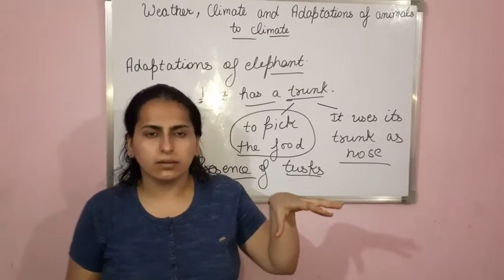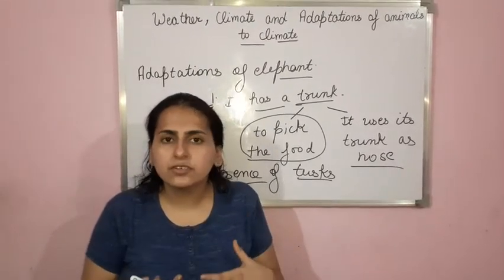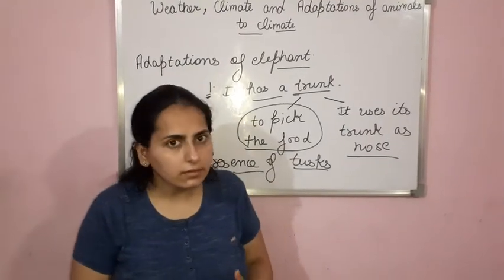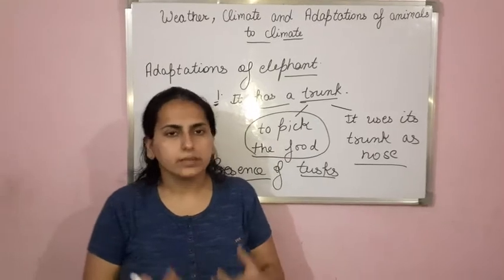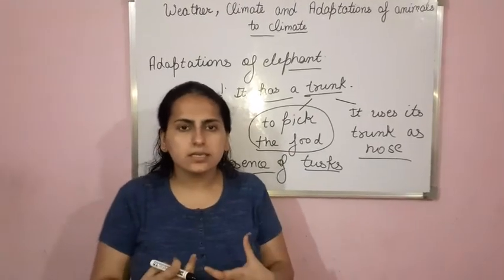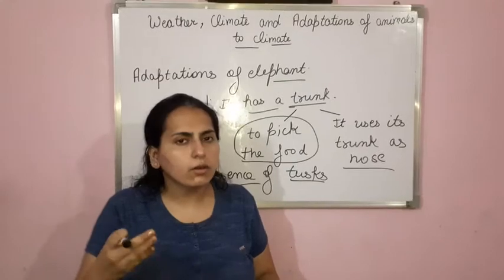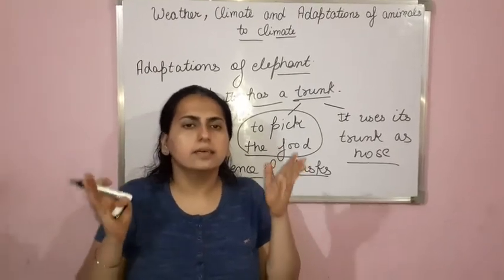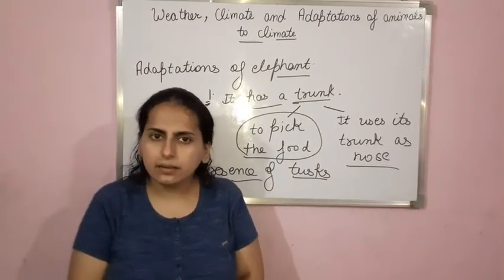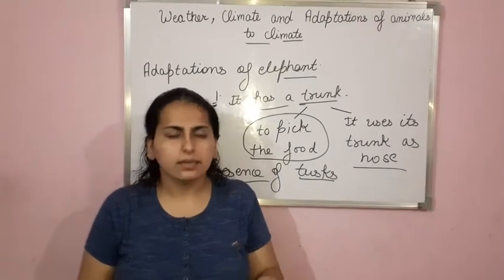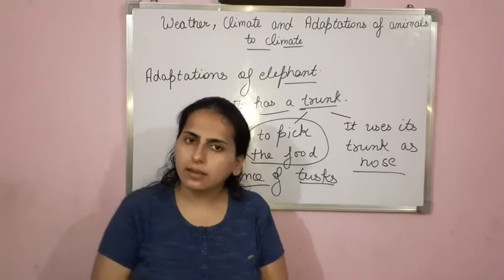The bark of the tree is something the elephant loves to eat. So this is an adaptation for getting food — its tusks help the elephant to tear the bark of the tree. And these tusks are nothing but the modified teeth.